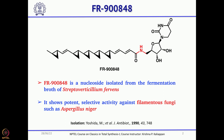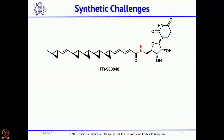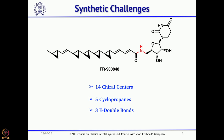Because of this structural complexity and biological activity, many synthetic groups were interested in the total synthesis of this natural product. Five years later, the first total synthesis was reported by Tony Barrett. The major challenges posed by this molecule are: there are 14 chiral centers, of which 4 are from the sugar unit and can be obtained from commercially available starting material, but the remaining ones are not easy to make. There are also 5 cyclopropanes and 3 E double bonds.